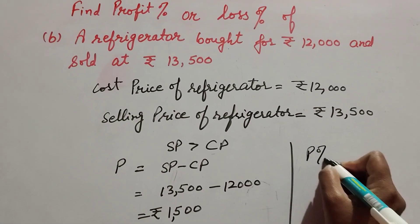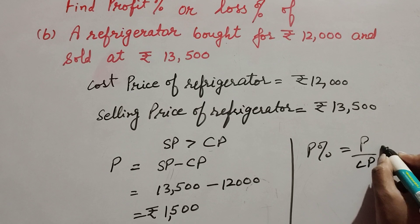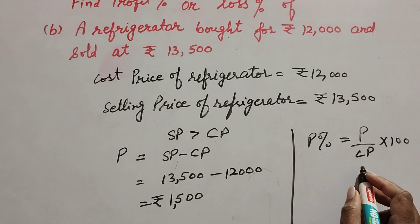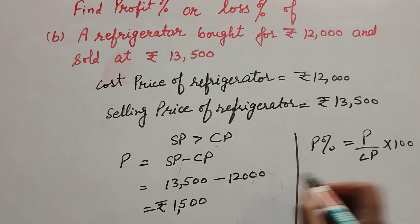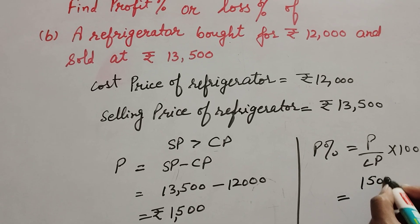Profit percentage equals profit over cost price multiplied by 100. So profit is Rs 1,500 over cost price Rs 12,000.